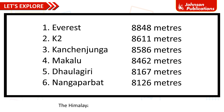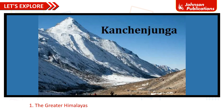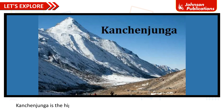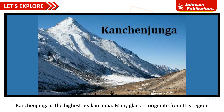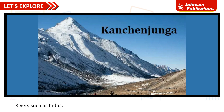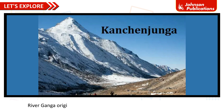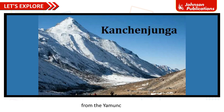The Himalayas consist of three parallel ranges. The Greater Himalayas, or Himadri, is the highest Himalayan range. Kanchenjunga is the highest peak in India. Many glaciers originate from this region. Rivers such as Indus, Ganga, Yamuna, and Brahmaputra originate from these glaciers. River Ganga originates from the Gangotri Glacier and River Yamuna originates from the Yamunotri Glacier.